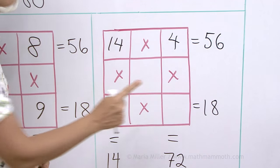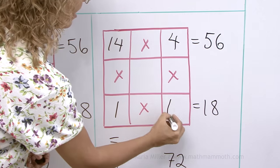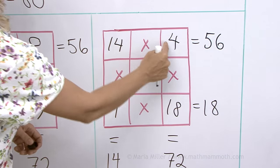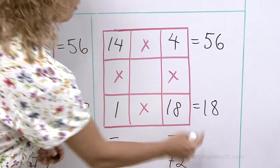One times what makes eighteen? Should be eighteen, right? And then we have four times eighteen makes seventy-two.